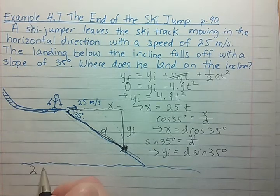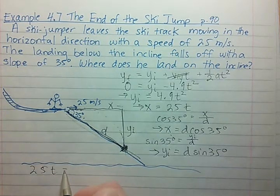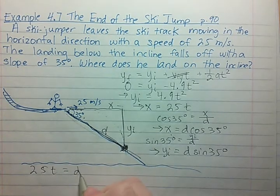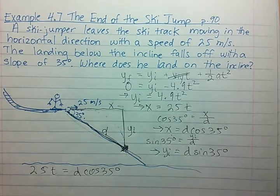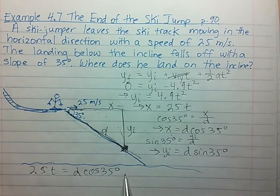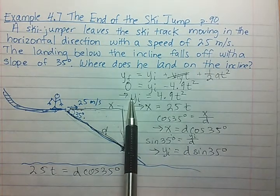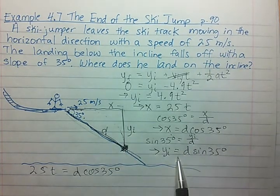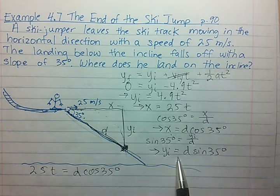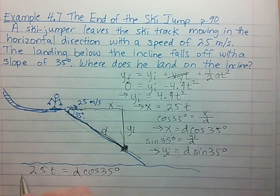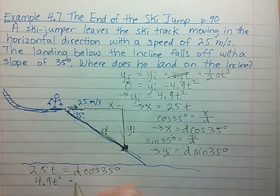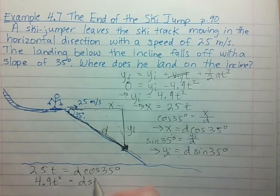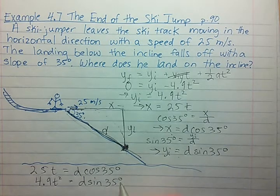So we end up with 25t equals d cosine 35 degrees. Now we also have an equation for yi here and one here. Those are the same. We can simply set those equal to each other. We have 4.9t squared equals d sine 35 degrees.